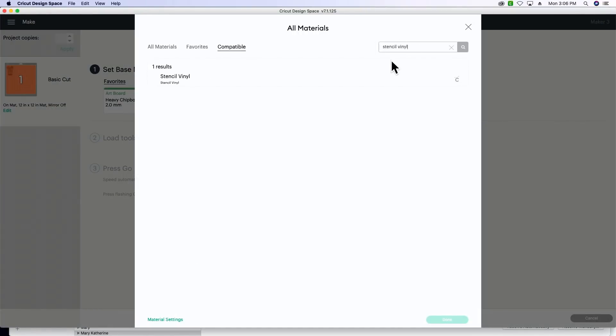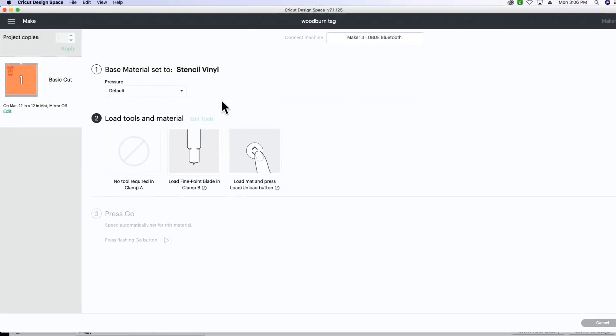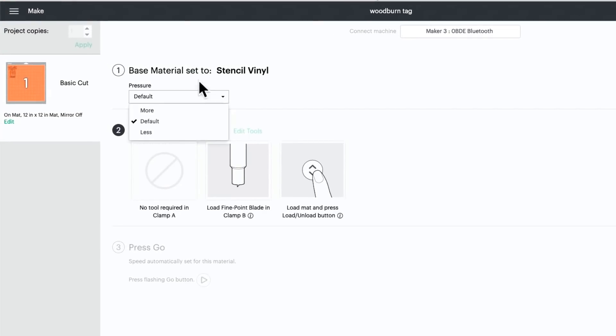You're going to select your material, which is going to be stencil vinyl. If you only have permanent vinyl on hand, you can use it. Just be very careful when you're using wood. It may pull up your wood a little bit. So make sure you really sand it down super good before you decide to use permanent vinyl. You can keep your pressure at default and then send it through your Cricut.